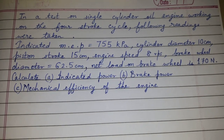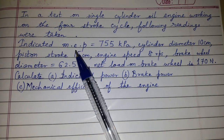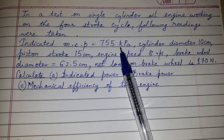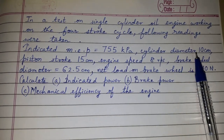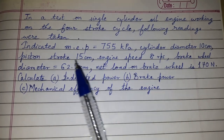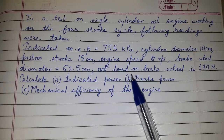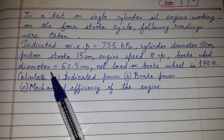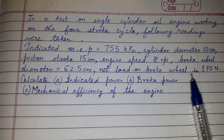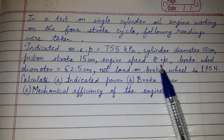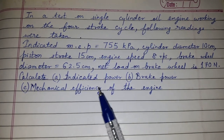In a test on a single cylinder oil engine working on a 4-stroke cycle, the following readings were taken: Indicated MEP (PM) is 755 kPa, cylinder diameter (D) is 10 cm, piston stroke (L) is 15 cm, engine speed (N) is 8 RPS, brake wheel diameter (dB) is 62.5 cm, and net load on brake wheel (W minus S) is 170 N. Calculate indicated power, brake power, and mechanical efficiency of the engine.